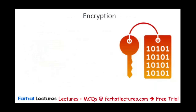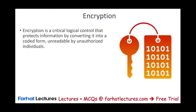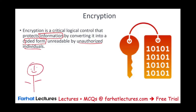Now let's move to encryption. What is encryption? Encryption is a critical logical control that protects information by converting it into a coded form unreadable by unauthorized individuals. In its simplest form, consider two individuals — like the king and the head of the military command back in the old days. The military commander would communicate with the king about what's going on, but they wanted the message to be secure.